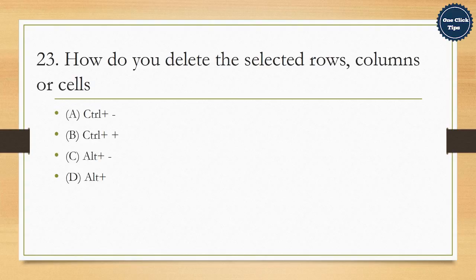23. How do you delete the selected rows, columns, or cells? A. Ctrl plus minus, B. Ctrl plus plus, C. Alt plus minus, D. Alt plus plus. The correct answer is A. Ctrl plus minus.